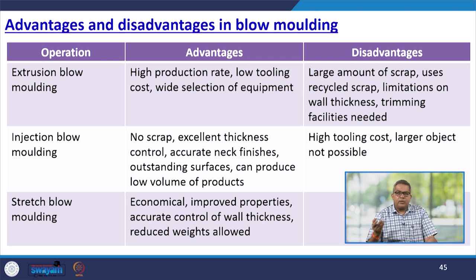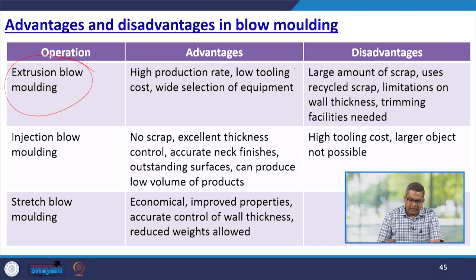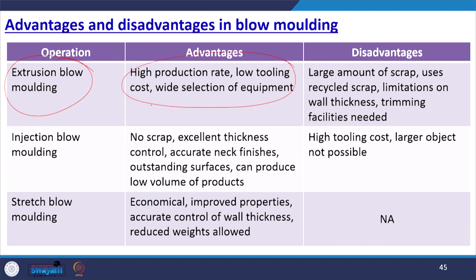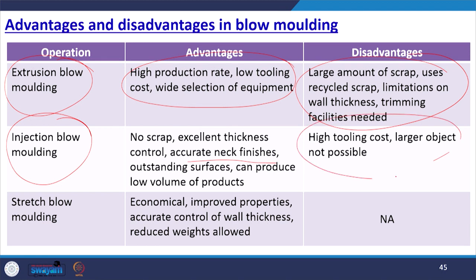Regarding advantages and disadvantages: extrusion blow moulding offers high production rate, low tooling cost, and wide equipment selection, but produces large amounts of scrap, has wall thickness limitations, and requires trimming facilities. Injection blow moulding has no scrap, excellent thickness control, accurate neck finishes, and outstanding surfaces, but has high tooling cost and cannot produce large objects. Stretch blow moulding is economical, offers improved properties, accurate wall thickness control, and reduced weight.